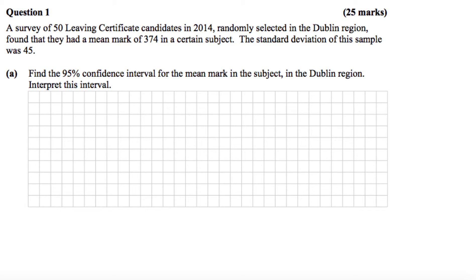This is question 1 from the 2015 sample questions on inferential statistics. A survey of 50 Leaving Certificate candidates in 2014, randomly selected in the Dublin region, found that they had a mean mark of 374 in a certain subject. The standard deviation of this sample was 45. Part A says find the 95% confidence interval for the mean mark in the subject in the Dublin region, and then we have to interpret this interval.